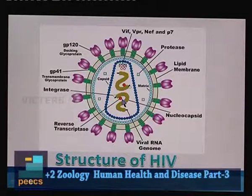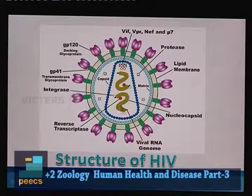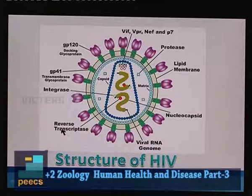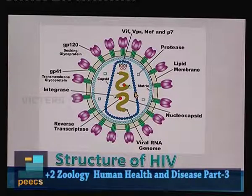These glycoproteins are involved in attachment of HIV to the host cell. Within HIV, you can see two RNAs inside the nucleocapsid. The reddish-colored component is reverse transcriptase. You can also see a matrix as well as a capsid. This is the structure of HIV.